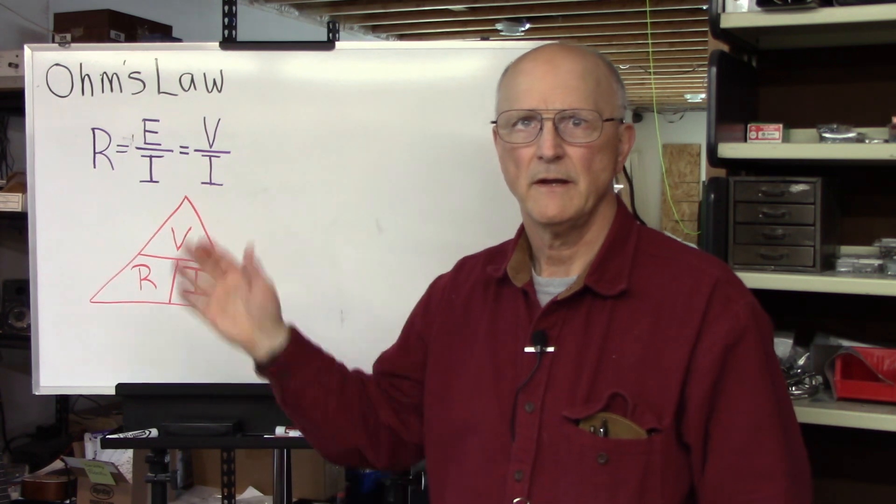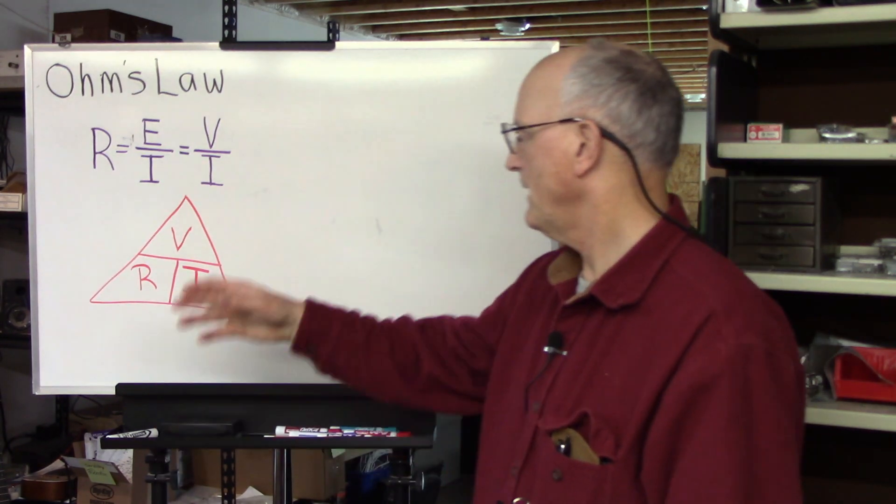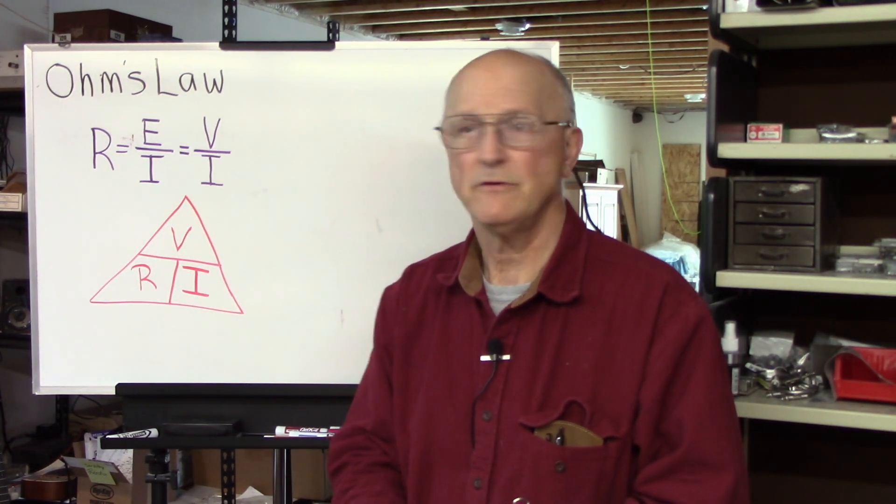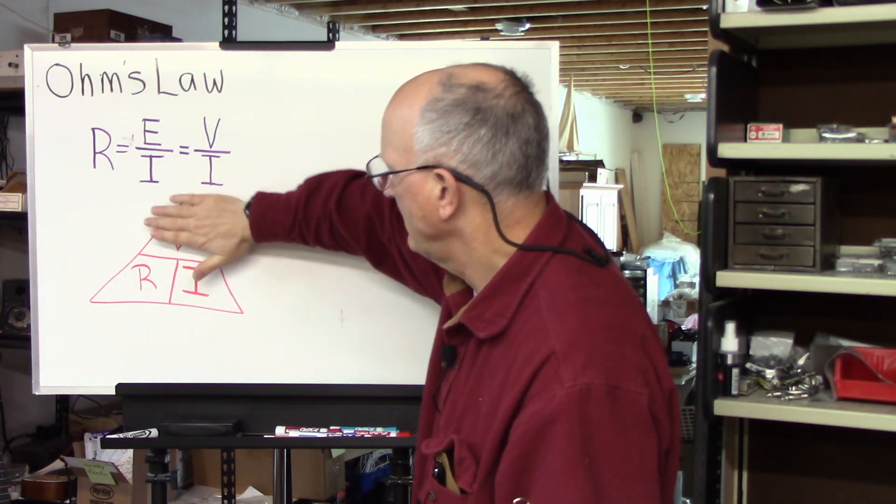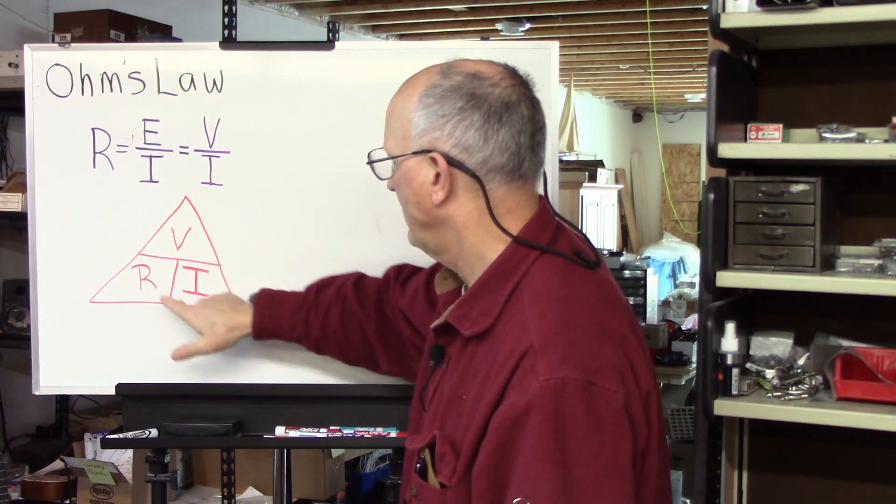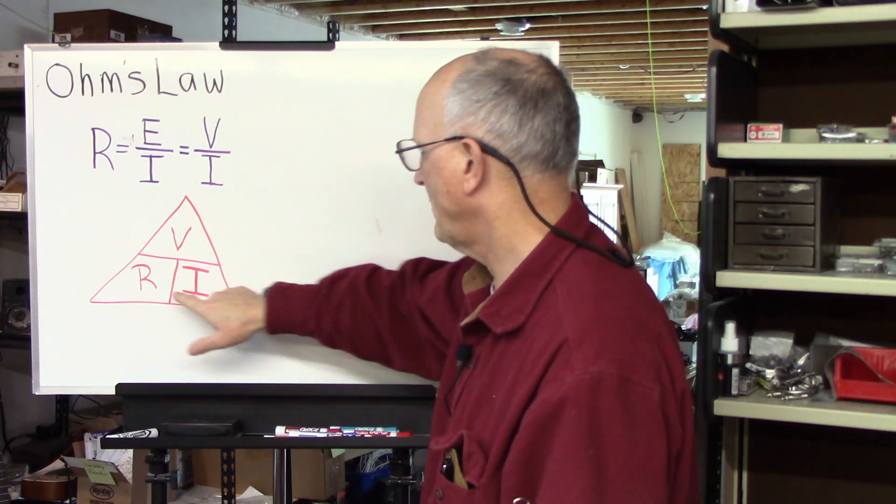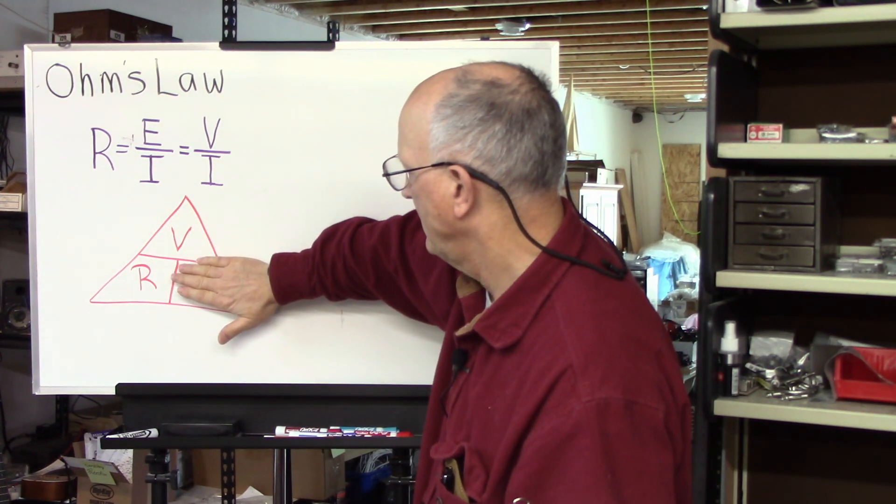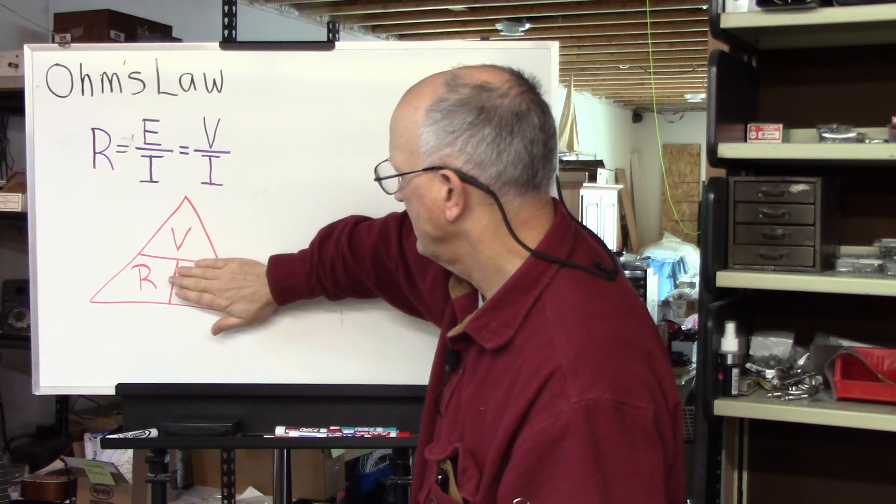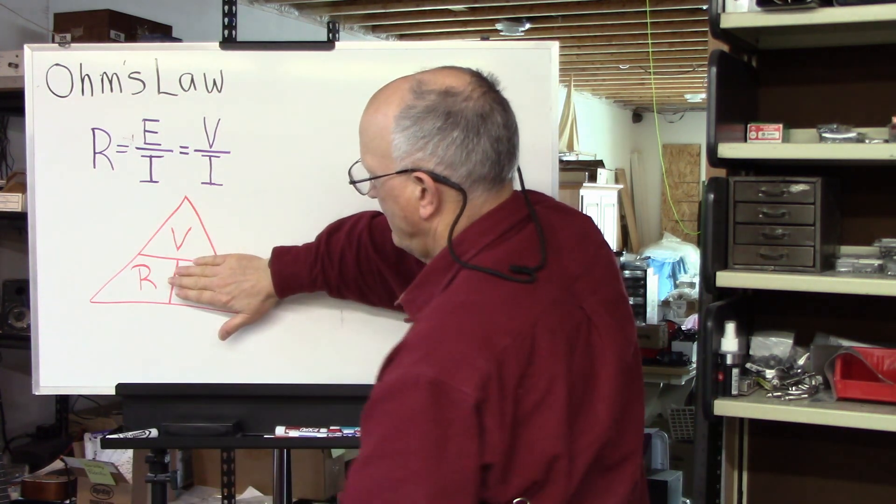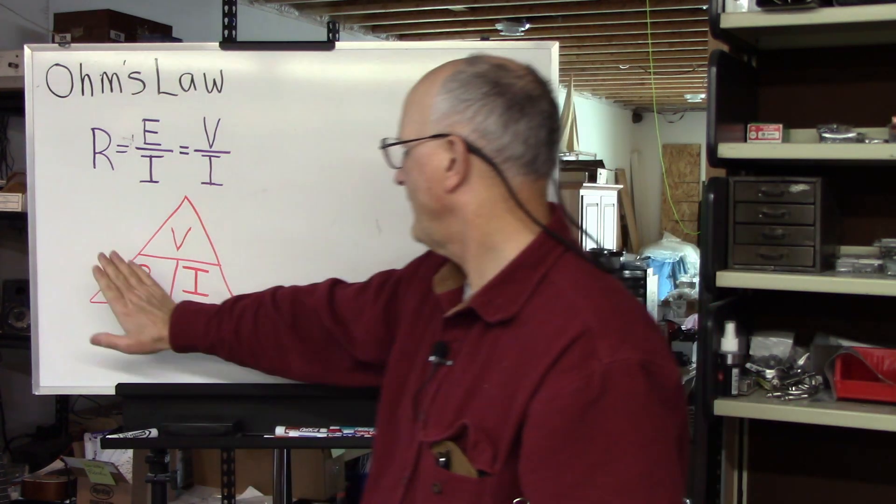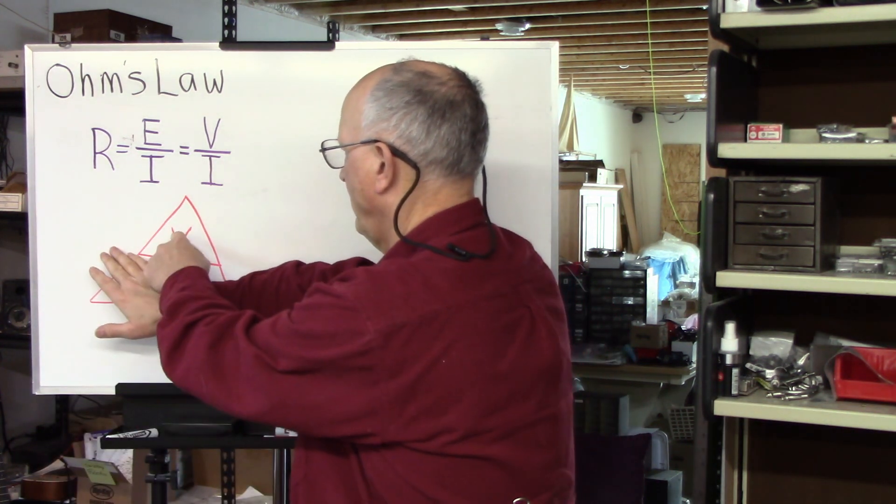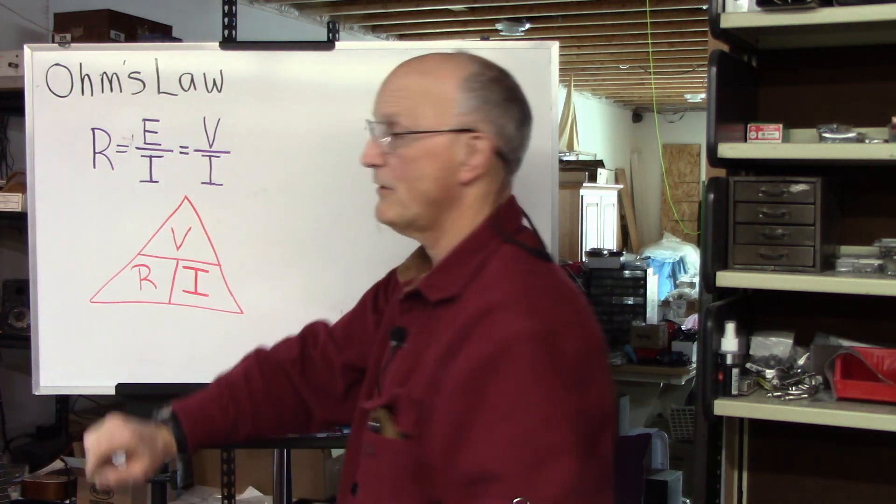Here is a very handy illustration that will help you to remember this relationship and be able to know how to use it. If you want to find the voltage, you cover up the voltage, and that says that the voltage is equal to the resistance in ohms times the current in amps. If you want to find the current, you cover up the current, and you know that the current in amps is equal to the voltage in volts divided by the resistance in ohms. If you want to find the resistance, you know that the resistance in ohms is going to equal to the voltage in volts divided by the current in amps.